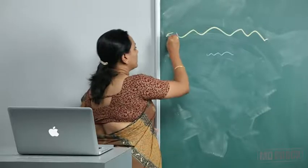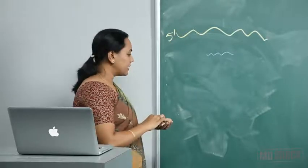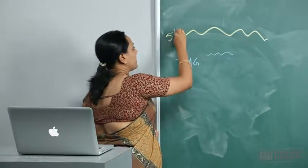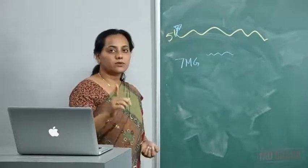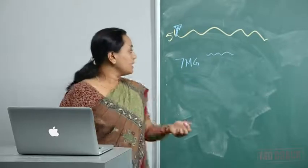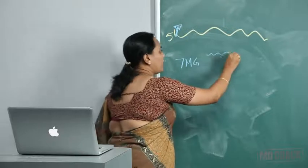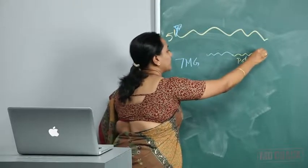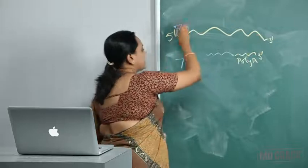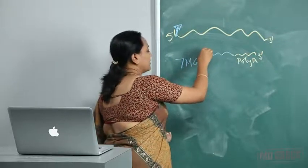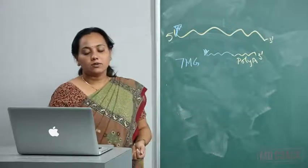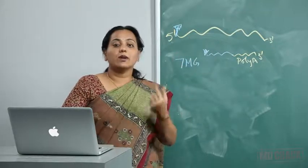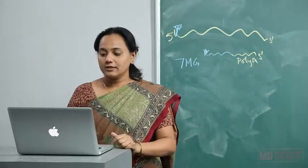The 7-methylguanosine cap is placed at the five prime end. At the three prime end, a poly-A tail is added. So the mRNA has a 7-methylguanosine cap at the five prime end and a poly-A tail at the three prime end. One more important modification is the decrease in length due to splicing.